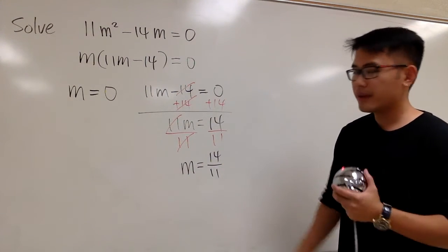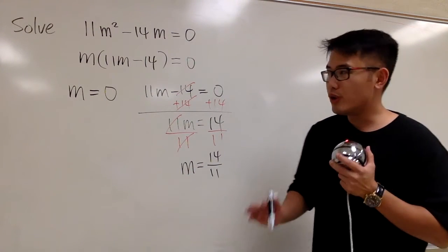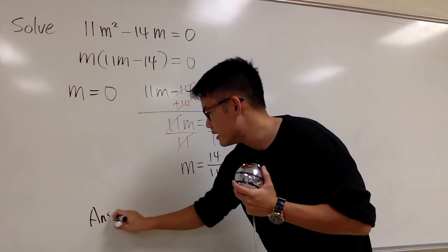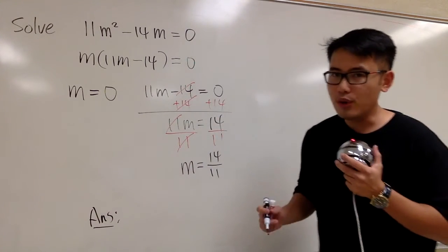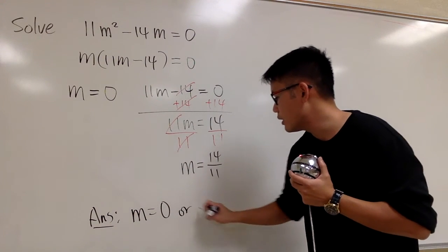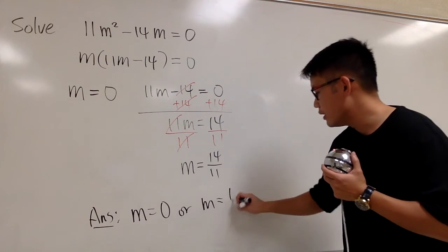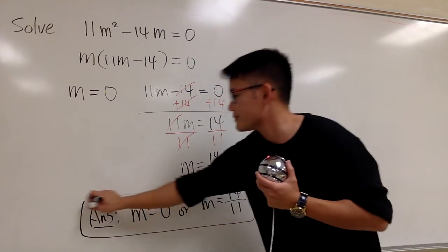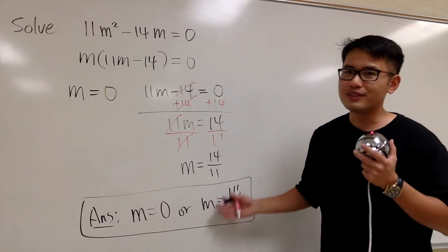I cannot reduce this. So, at the end, be sure you include both answers. So, let me make this clear. We have two answers: m is equal to 0, or m is equal to 14 over 11. But be sure you include both numbers for the answers.